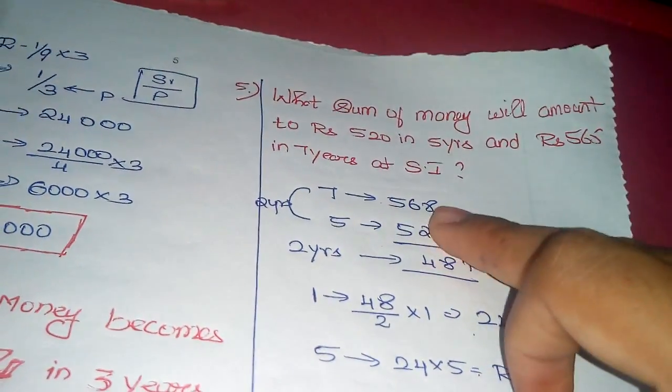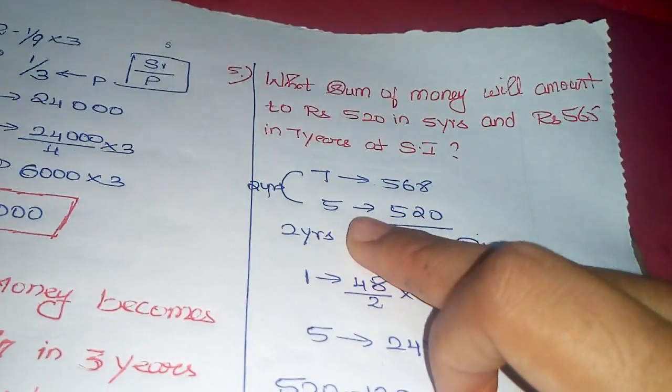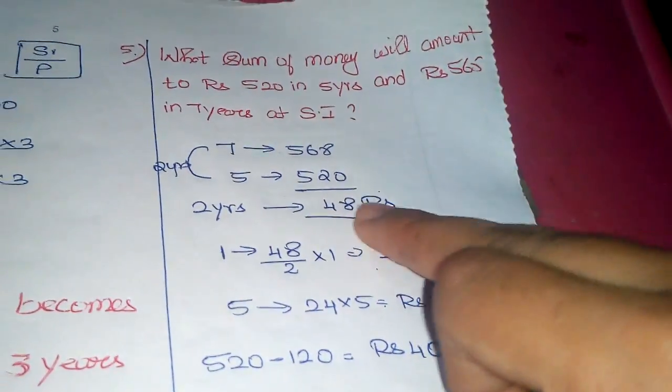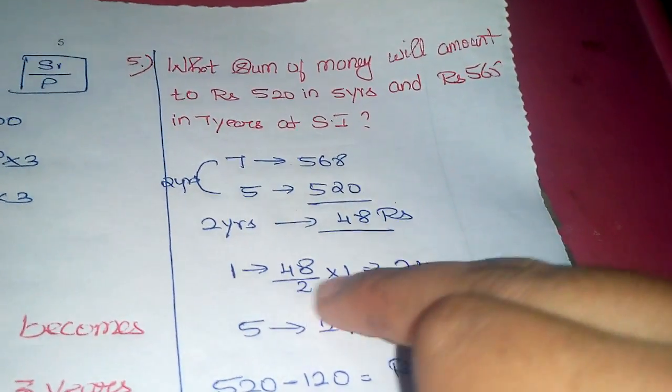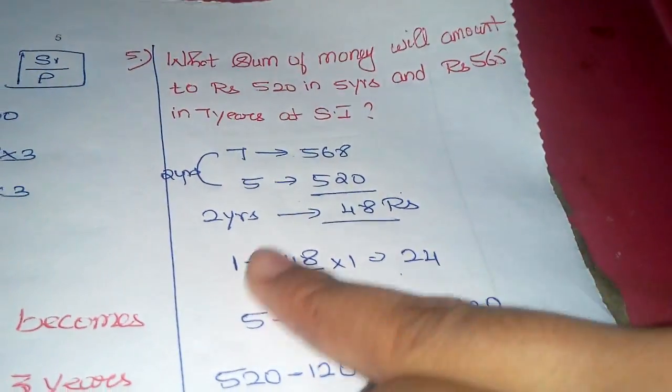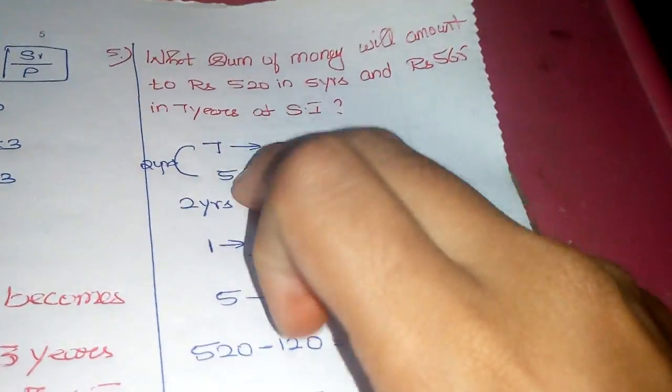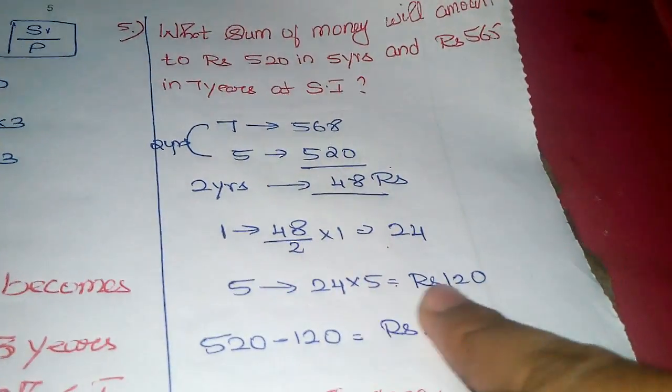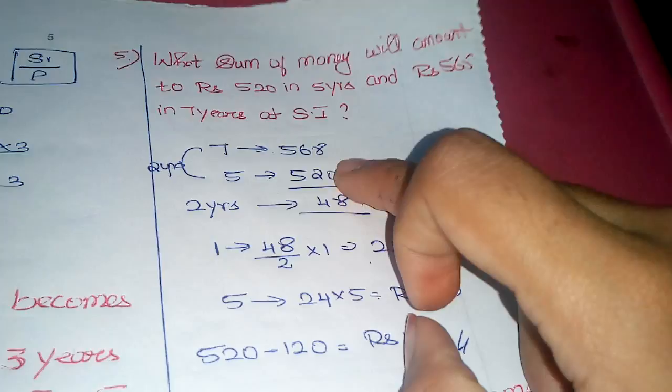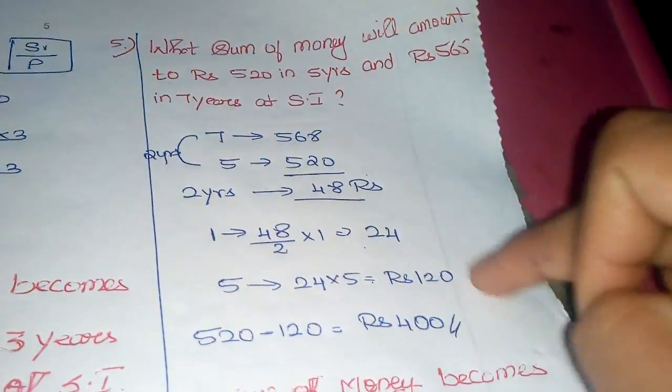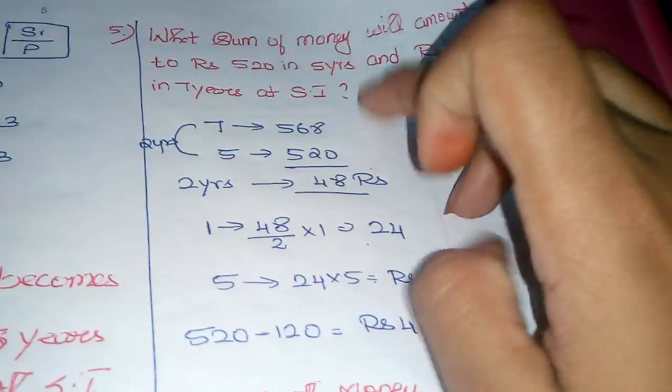Per one year: 45 by 2 into 1 equals 24 rupees. For 5 years: 24 into 5 equals 120. 520 minus 120 - when you subtract these, you get sum of money equal to 400. This model is very important.